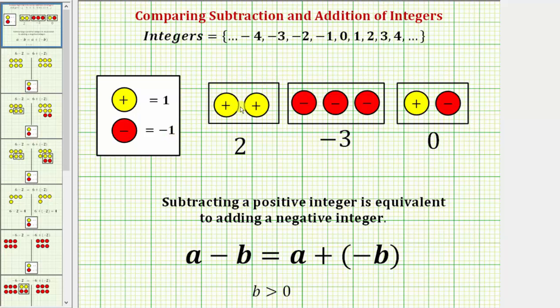For example, two positive chips equals positive two, three negative chips equals negative three, and a positive chip and negative chip together combine and simplify to zero.